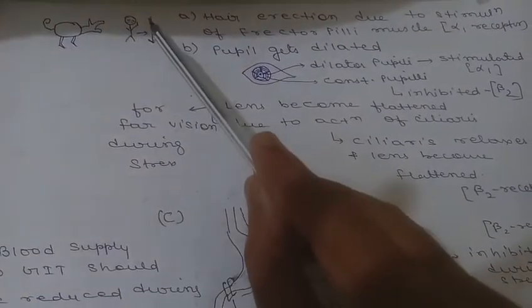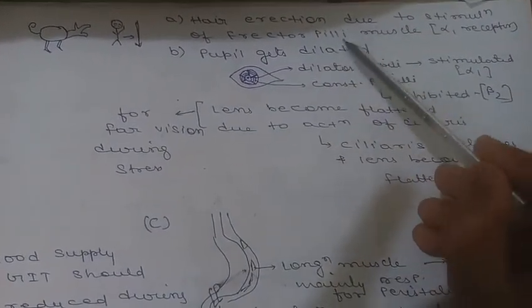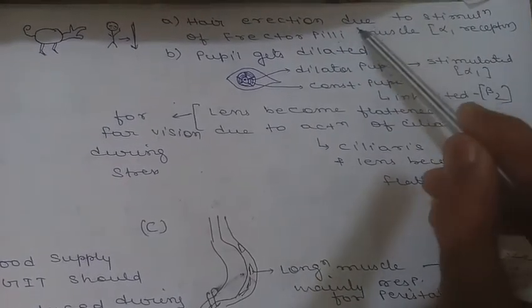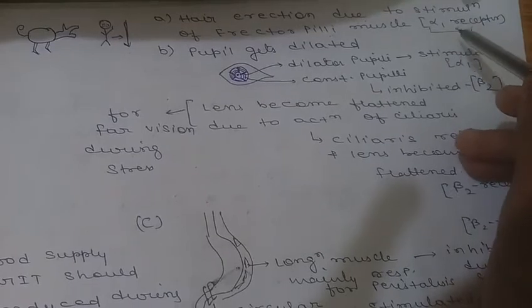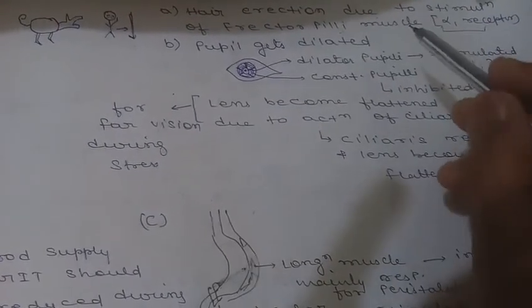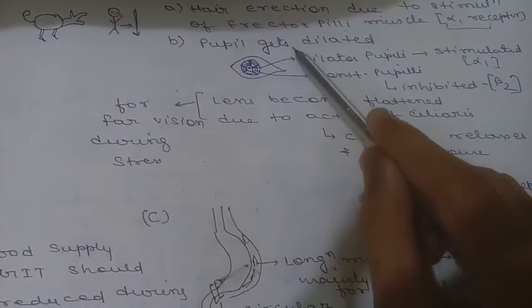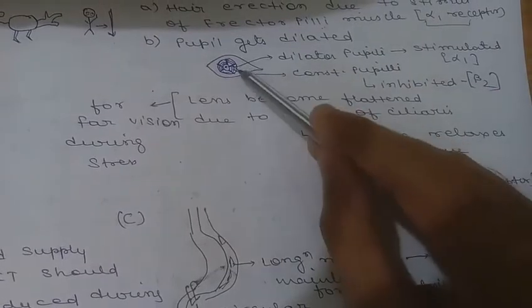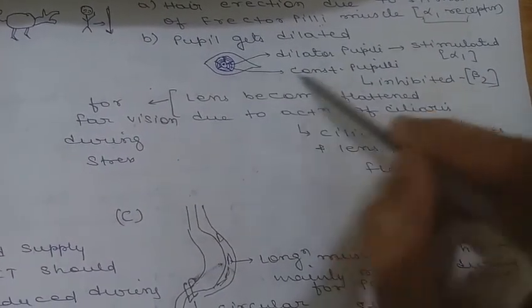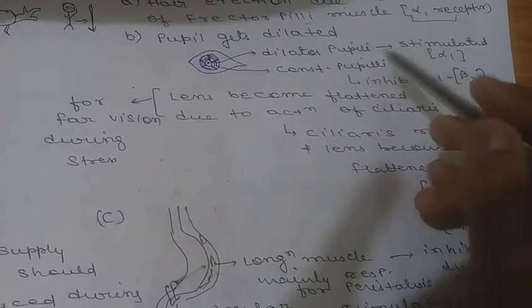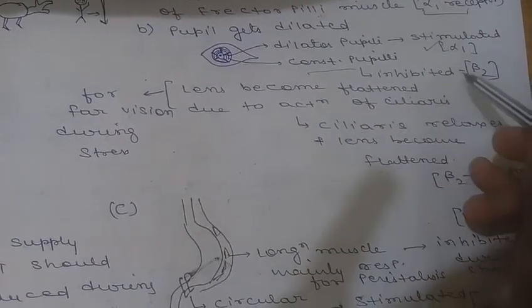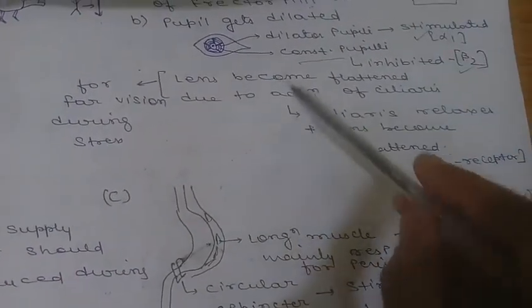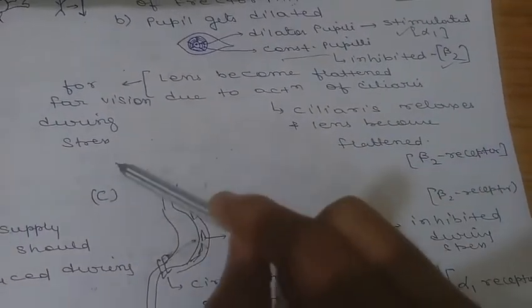Going from top to bottom: hair erection occurs due to stimulation of the arrector pili muscle, which has alpha-1 receptors (stimulation rule). The pupil dilates — the dilator pupillae muscle must be stimulated so it has alpha-1 receptors, while the constrictor pupillae, which needs to be inhibited during dilation, has beta-2 receptors.